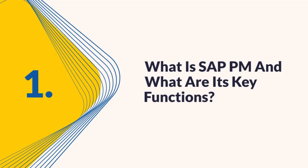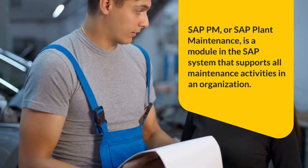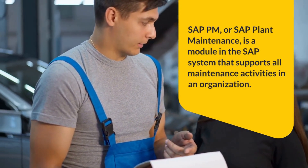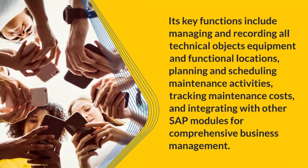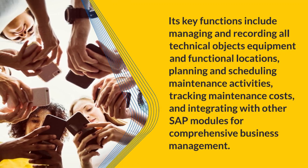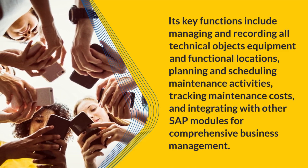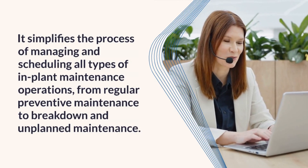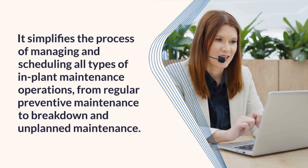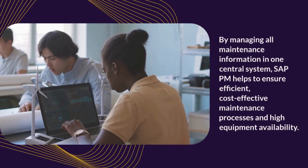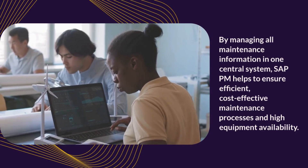Question 1: What is SAP PM and what are its key functions? SAP PM, or SAP Plant Maintenance, is a module in the SAP system that supports all maintenance activities in an organization. Its key functions include managing and recording all technical objects' equipment and functional locations, planning and scheduling maintenance activities, tracking maintenance costs, and integrating with other SAP modules for comprehensive business management. It simplifies managing all types of in-plant maintenance operations, from regular preventive maintenance to breakdown and unplanned maintenance, ensuring efficient, cost-effective maintenance processes and high equipment availability.